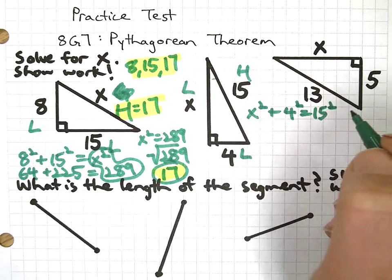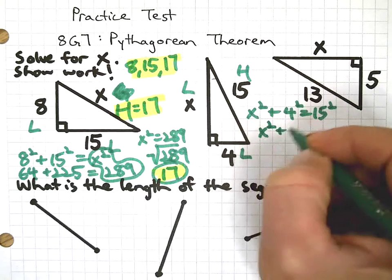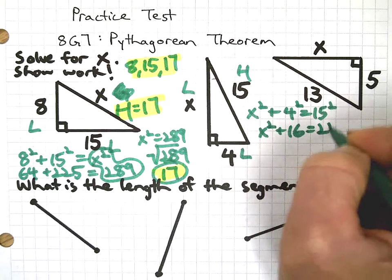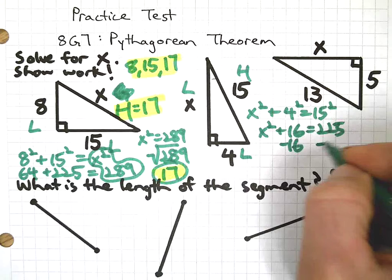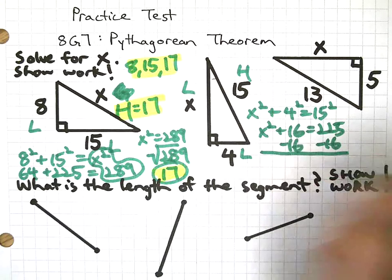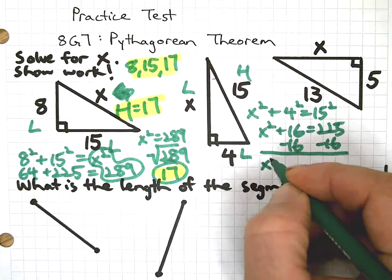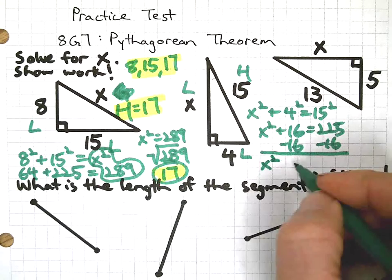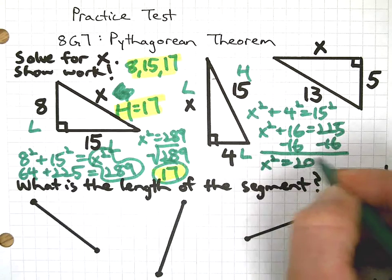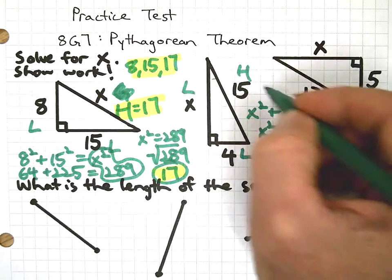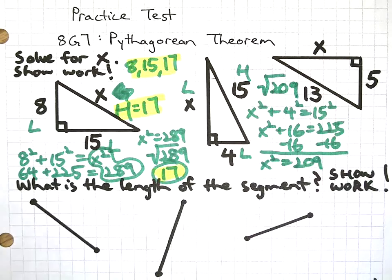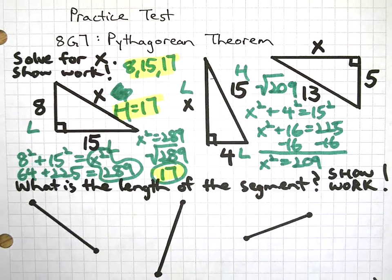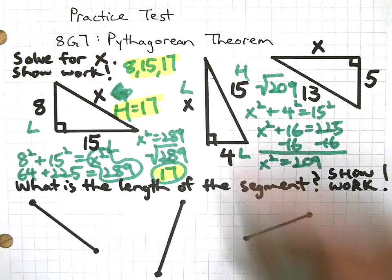Next problem: leg, leg, hypotenuse squared. Okay, x squared plus 16 equals 225. When you have an unknown leg, you do need to subtract at some point. Some people do it first, some people do it last. Speaking of last, we also need to take the square root of 209.